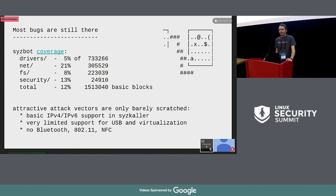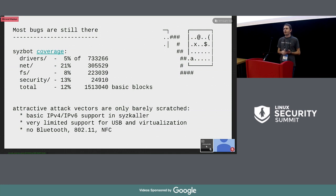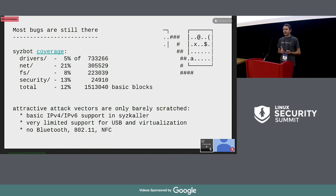Most certainly there are a lot of bugs still in the kernel. Right now, Syzbot covers only 12% of the kernel code on x86, and most of the attractive attack vectors are still uncovered. We have only basic support for networking for IPv4 and IPv6 — we don't really generate packets that do anything complex like initiate a handshake. There is very limited support for USB, for KVM, and there is almost no support for wireless networking stacks, which probably contain a lot of bugs — for example, information leaks that don't require physical access to the machine.